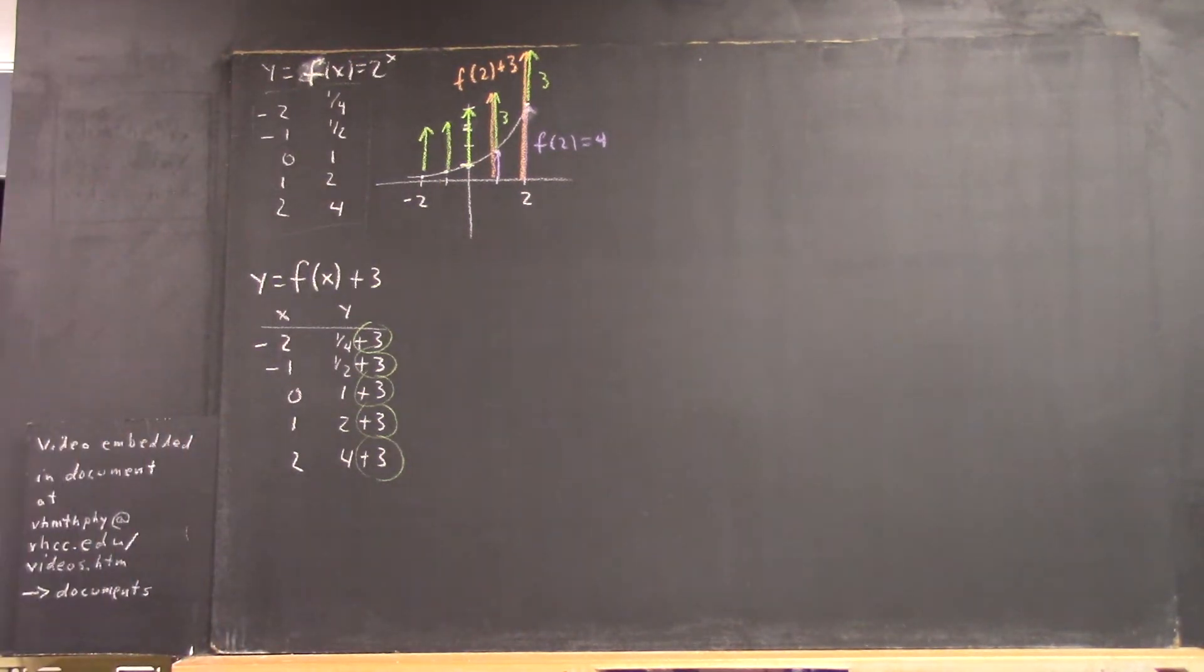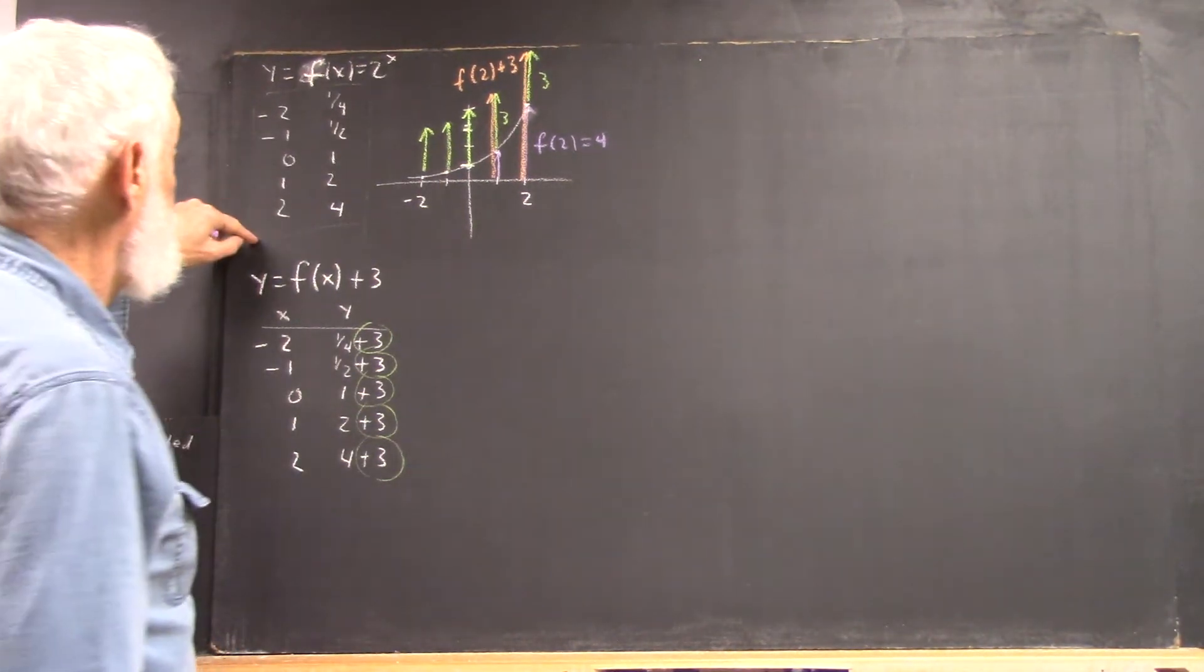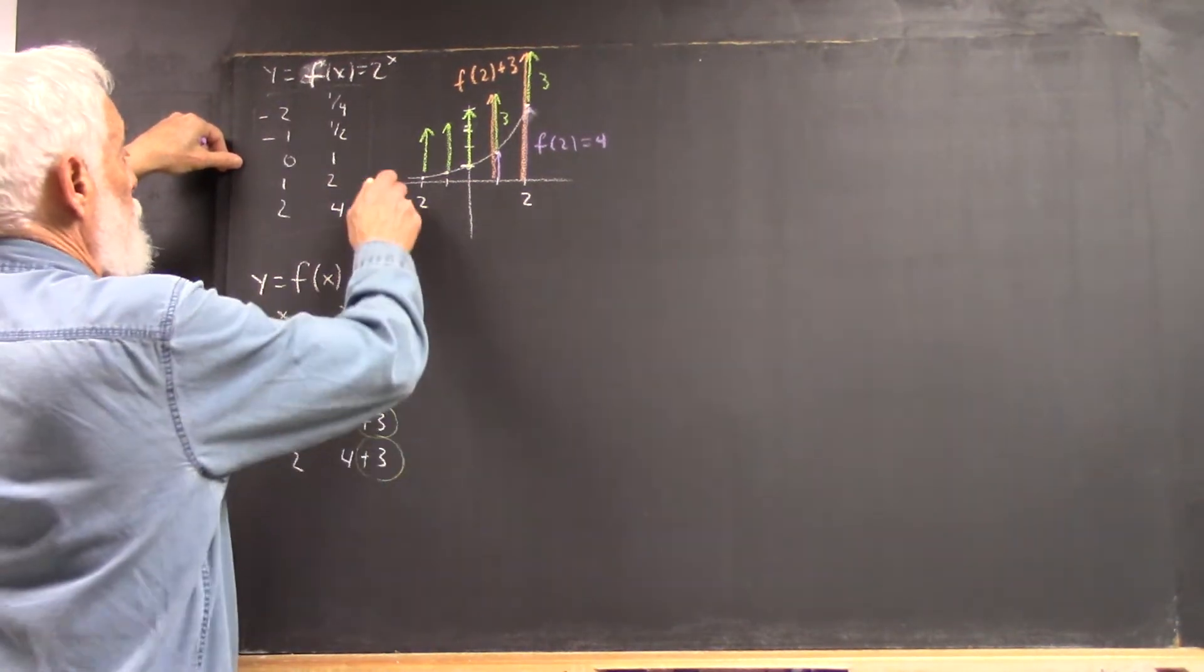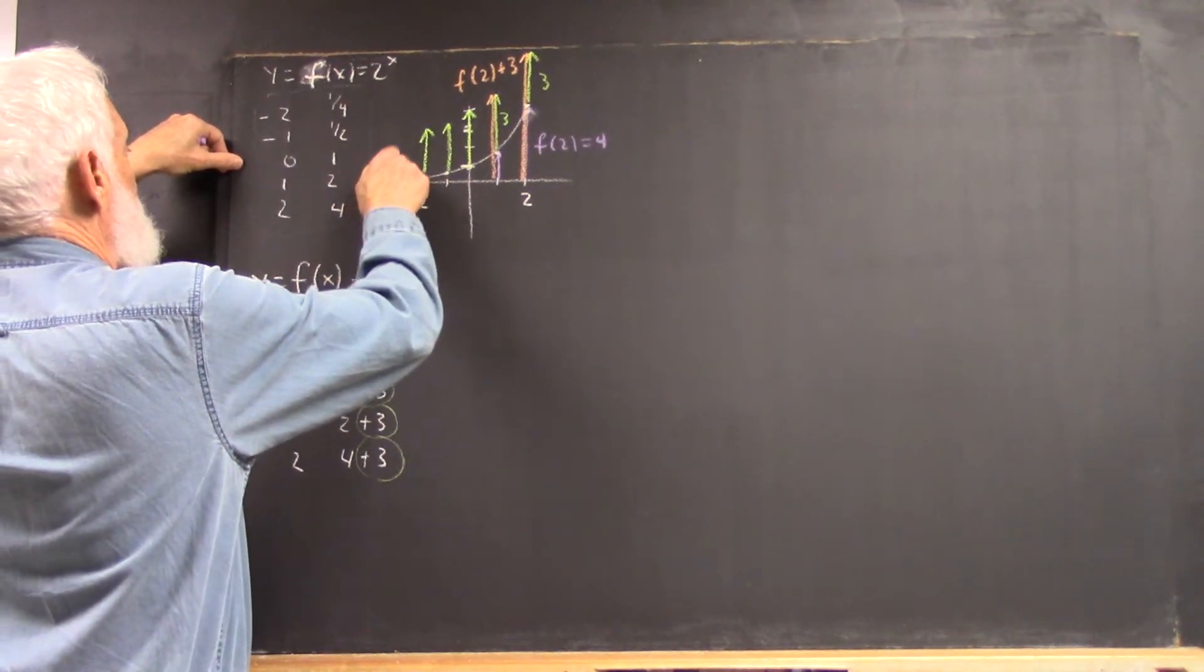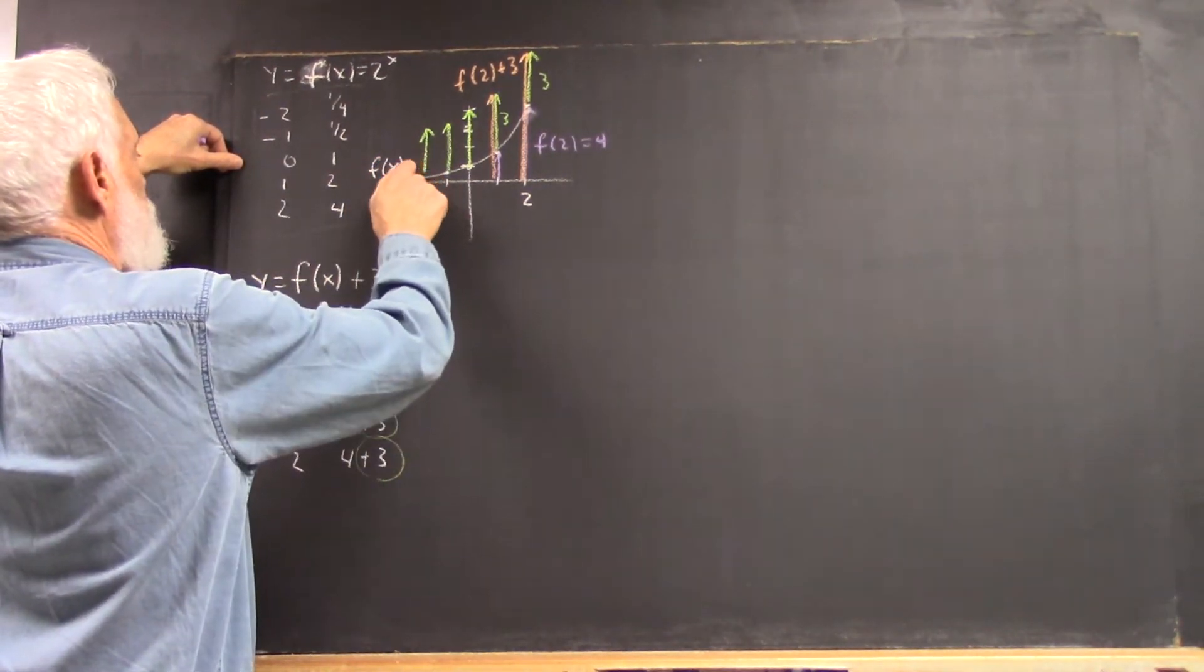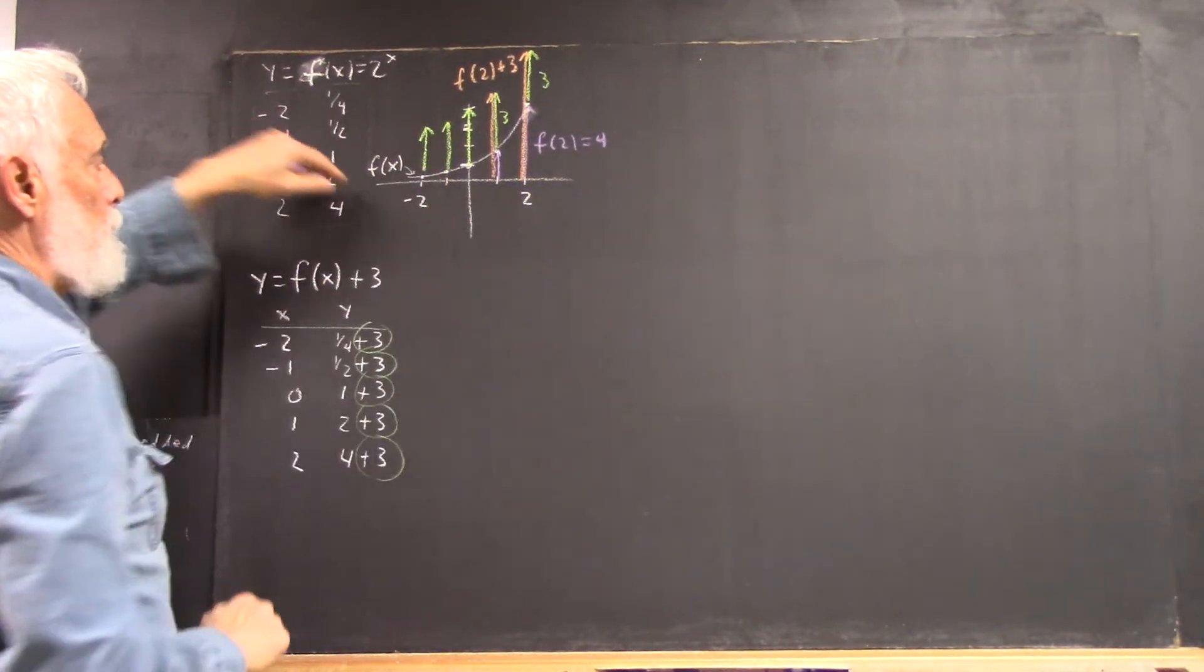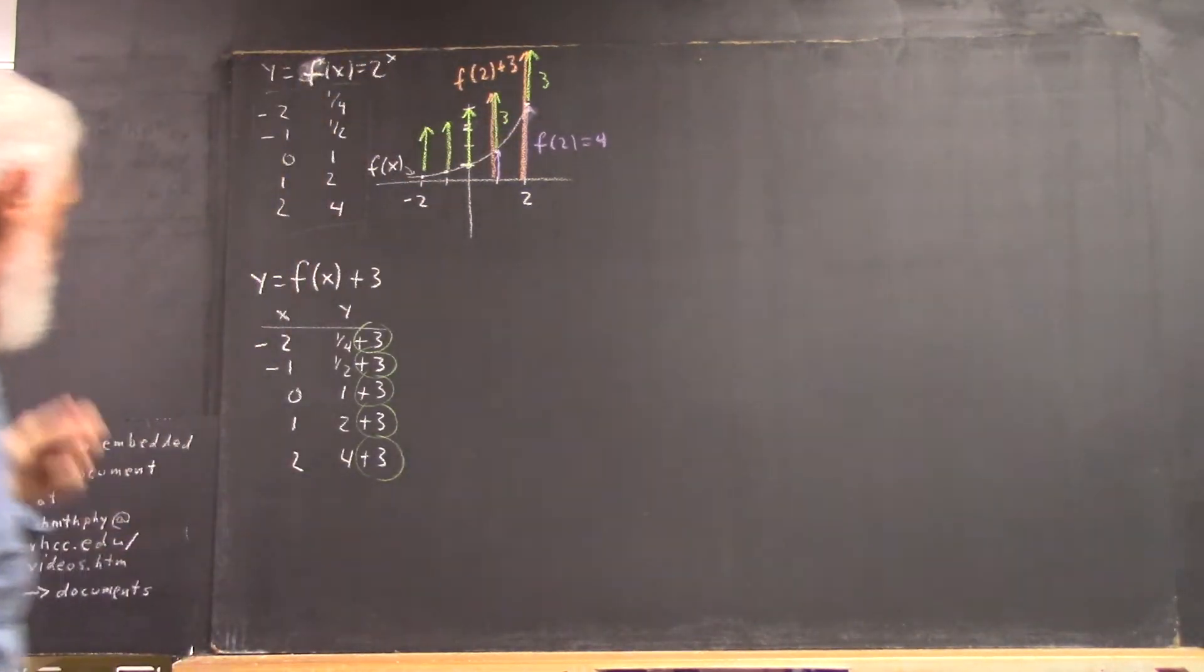And we graph, well, we make a table, and we graph that function. So here is our f of x graph, right? And we're familiar with this graph, so we understand that.